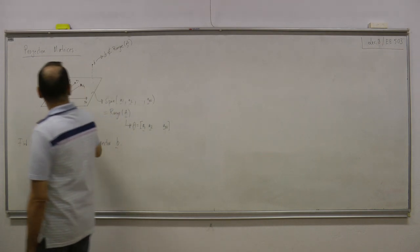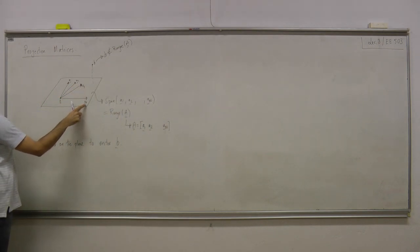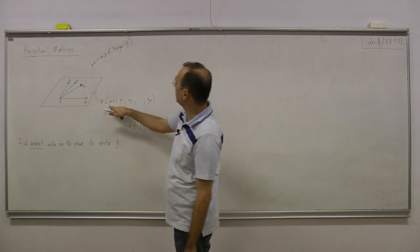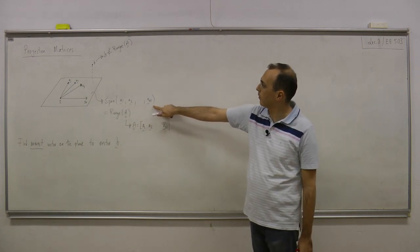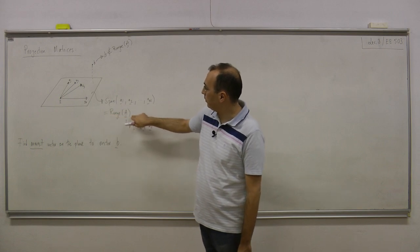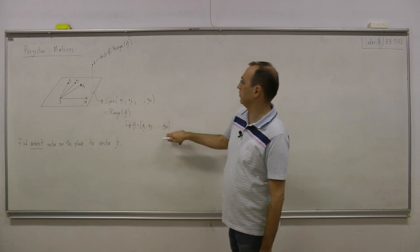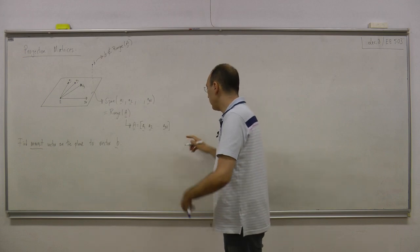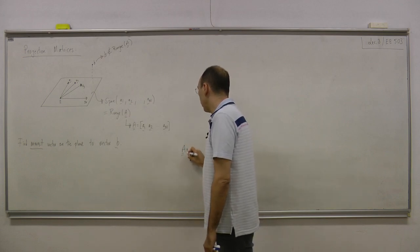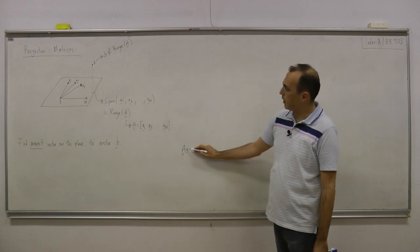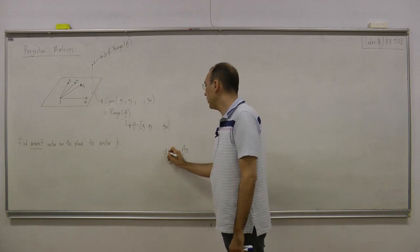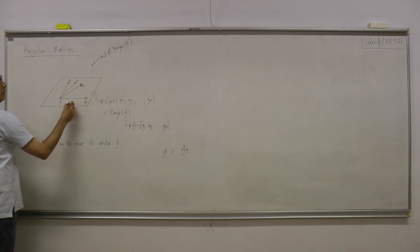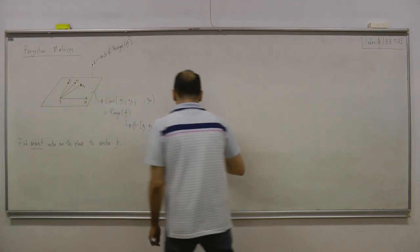Let's assume that I have n vectors a1, a2, a3, and the last vector is an. This diagonal shape represents the span of these n vectors. It can also be expressed as the range space of matrix A. The range space of a matrix: think about an arbitrary linear combination weight x. So A times x is another vector which is an element of this space.